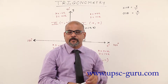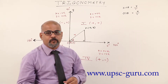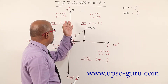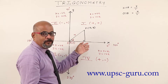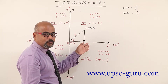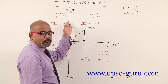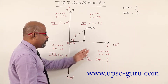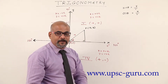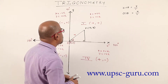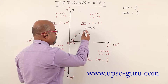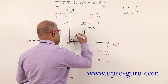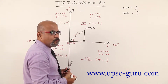Now let us check values of all trigonometric ratios when your angle theta falls on respective axis. That means when theta is on the positive direction of x-axis: theta equals 0 degree, theta equals 90 degree, theta equals 180 degree, theta equals 270, and theta equals 360. For that, we consider radius r equals 1.